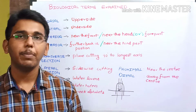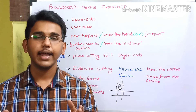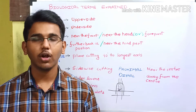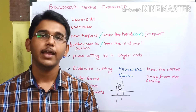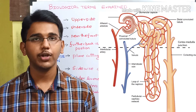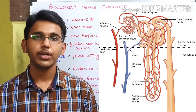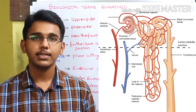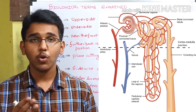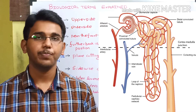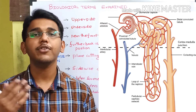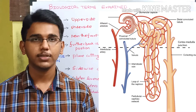Take the nephron — the functional unit of the kidney — as an example. It consists of a proximal convoluted tubule and a distal convoluted tubule. The proximal convoluted tubule is present near the starting point, the glomerulus, which is why it is called proximal. The distal convoluted tubule is present away from the glomerulus, which is why it is called distal.